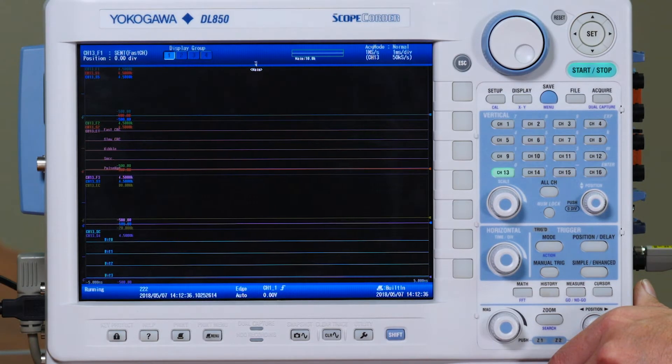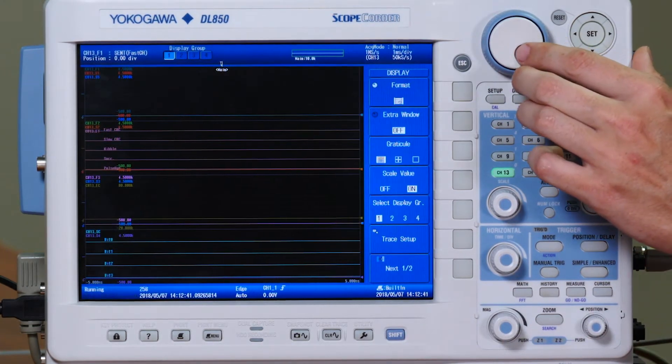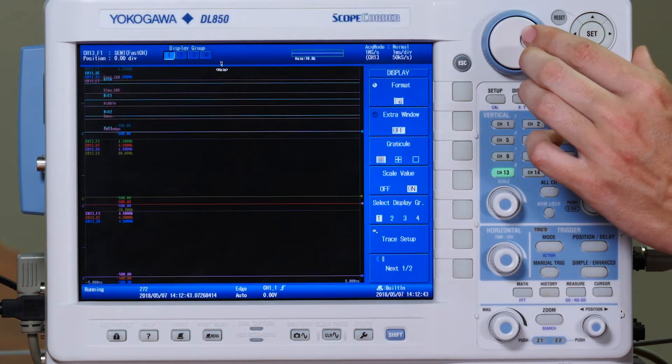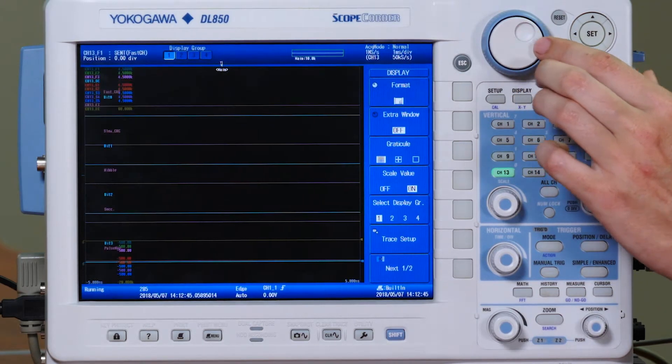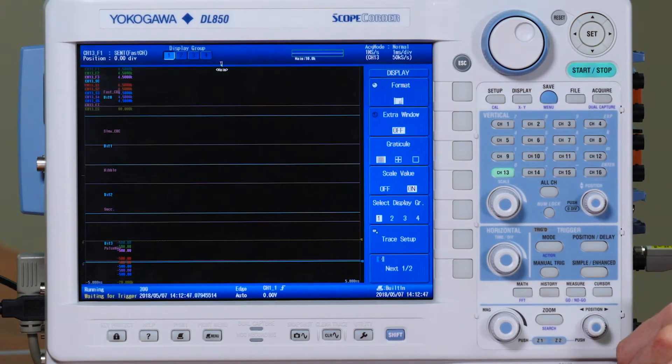Another preference of mine is to have one display, so I would go to display and using the jog I would take it down to one display. We will then set our time per division down to 100 milliseconds per division to be sure we get a good visualization of our waveforms.